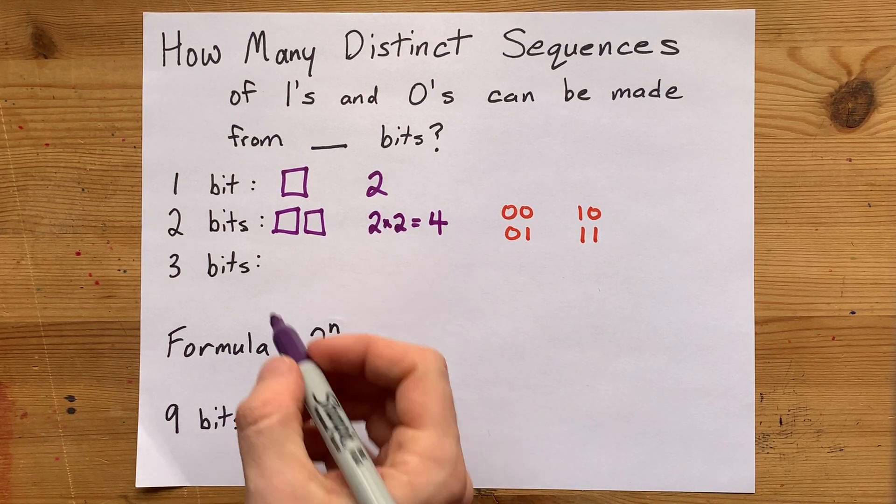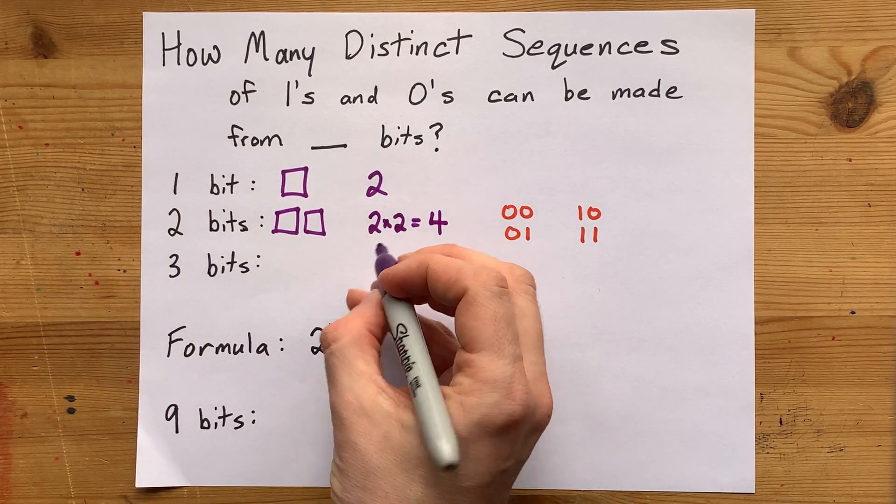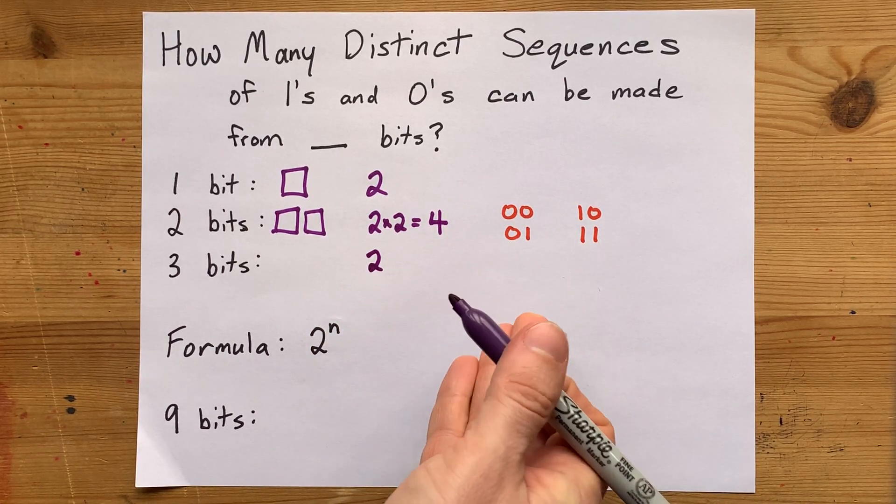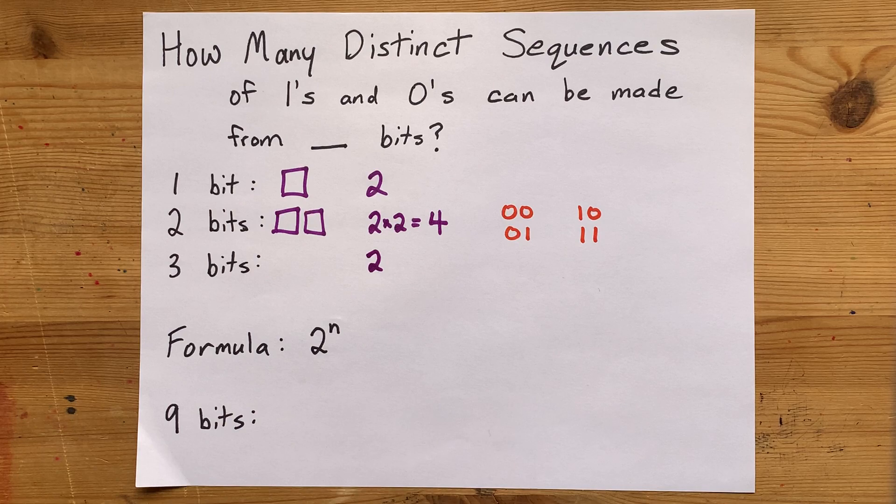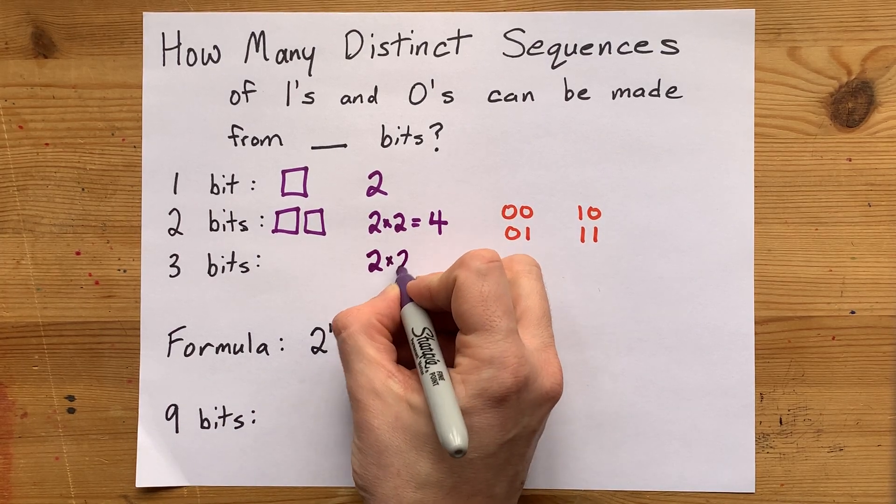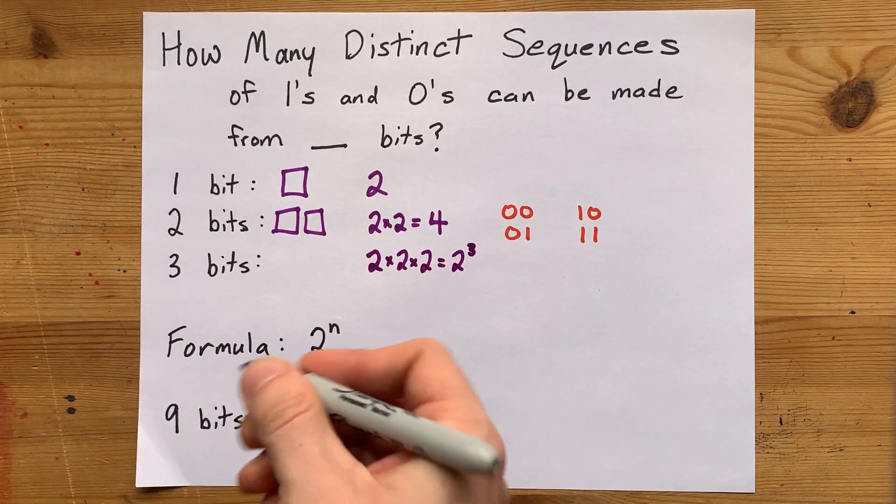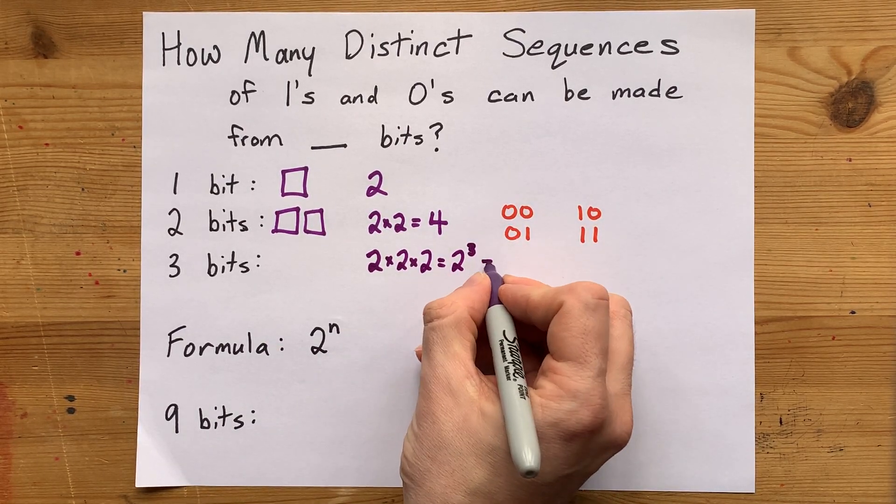You might already see a pattern here. If you have three bits, it's two options for the first bit, two for the second, and two for the third, and you multiply them all together. That makes two to the power of three, or two times itself three times, which is eight.